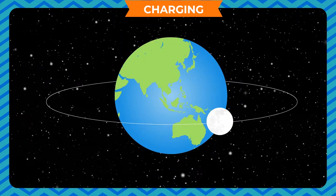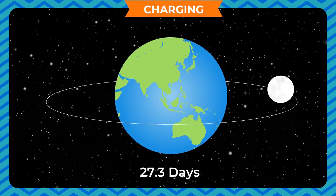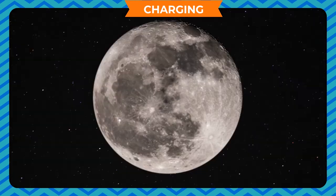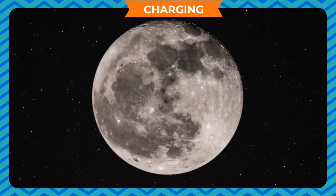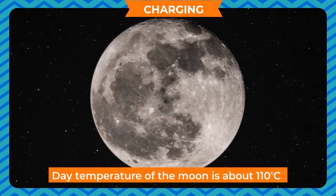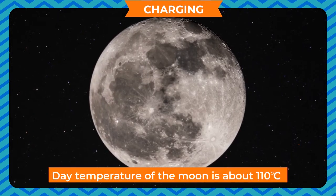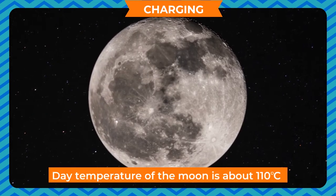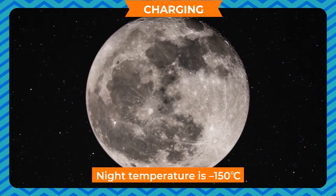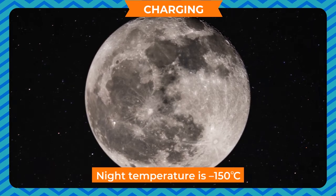The moon takes about 27.3 days to complete one revolution around the Earth. The day temperature of the moon is about 110 degrees Celsius while the night temperature is minus 150 degrees Celsius approximately.